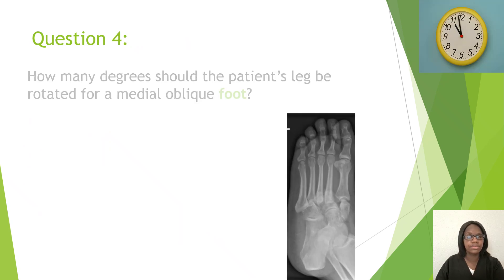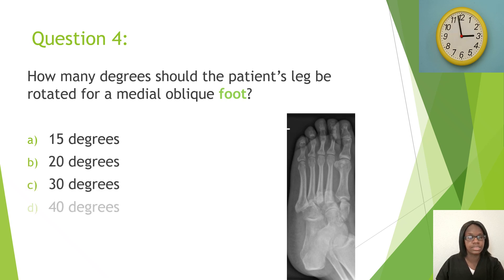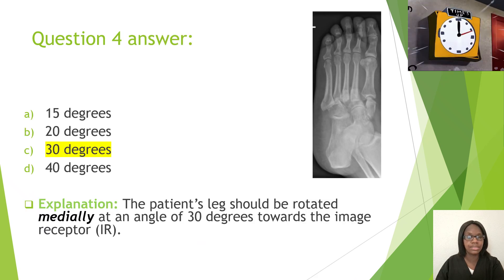Question four: How many degrees should the patient's leg be rotated for a medial oblique foot? A, 15 degrees; B, 20 degrees; C, 30 degrees; D, 40 degrees. The correct answer is C, 30 degrees. The patient's leg should be rotated medially at an angle of 30 degrees towards the image receptor.